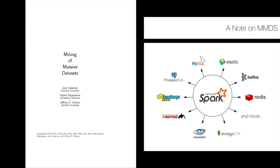A note on the MMDS textbook: Chapter 2 focuses a lot on large-scale distributed processing environments using Spark and Hadoop — frameworks for massively parallel processing to deal with web-scale graphs like the Twitter or Facebook graph. We will not dive deeply into Spark or Hadoop in this class, though I have a lot of experience with them. If you have interest in using one of these technologies for your project, this is something we can explore together.